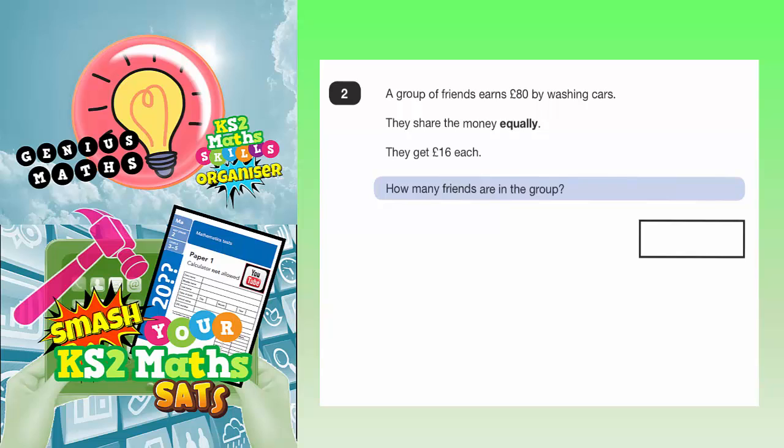So basically what we need to do is figure out how many £16 go into £80. So the easiest thing to do here is just count up in 16s.